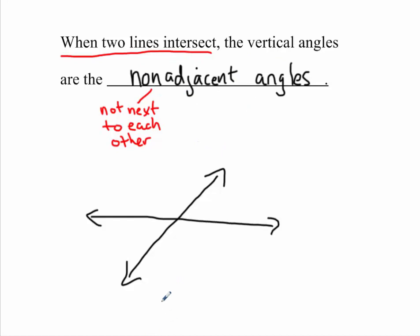So let's look at the non-adjacent. Let's say I'm talking about this angle here. What angle is not next to this angle? Well, this angle here is next to it, and this angle here is next to it, so the non-adjacent would be on this side. So these are non-adjacent. And if your two lines intersect, the angles that are not next to each other are called vertical angles.